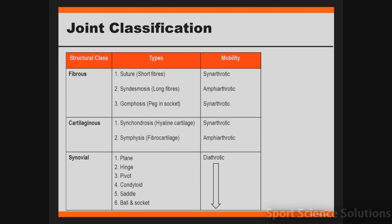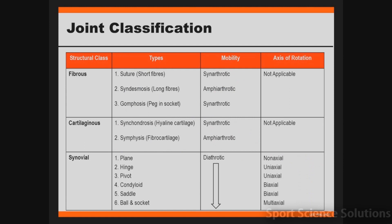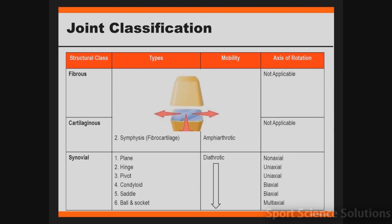The final stage of joint classification is the axis of rotation, which describes how many axes the joints rotate around. For fibrous or cartilaginous joints where the mobility is synarthrotic — no movement — or amphiarthrotic — slight movement — the axis of rotation is not applicable because they're not rotating around any axes. This focus on axis of rotation applies to synovial joints because they're all diarthrotic or freely movable. The first type is called non-axial, meaning rotating around no axis. Plane joints are the example — they're freely movable but don't rotate around any particular axis.